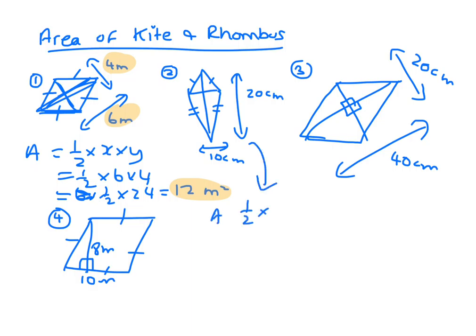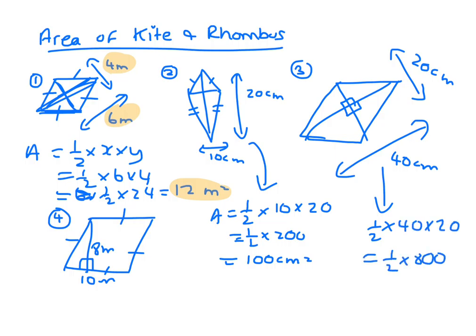This is a half times 10 times 20, that would be a half of 200, which is 100 centimeters squared. A half times 40 times 20, which is a half times 800, which is 400 centimeters squared.